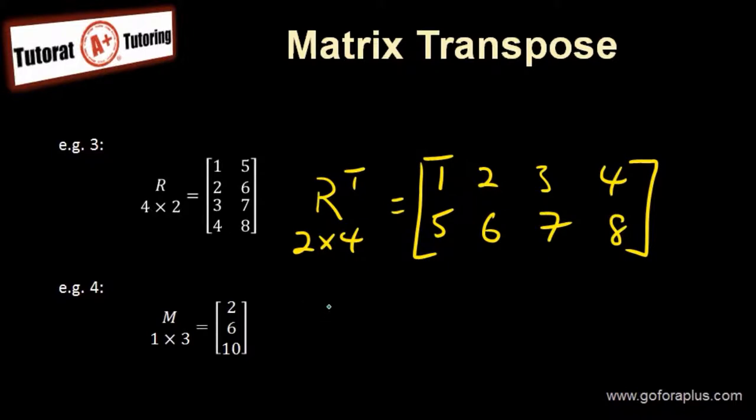Example four. This is a column vector, which becomes a row vector. This is matrix M transpose. 1 by 3 becomes 3 by 1. So it becomes two, six, ten as a row vector.